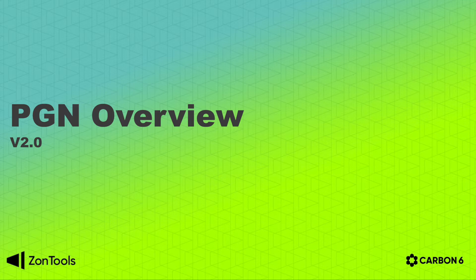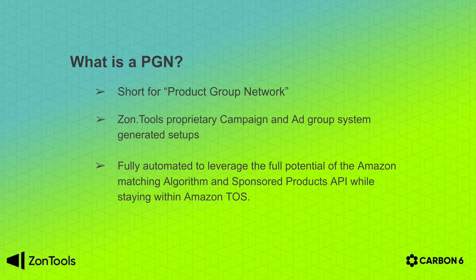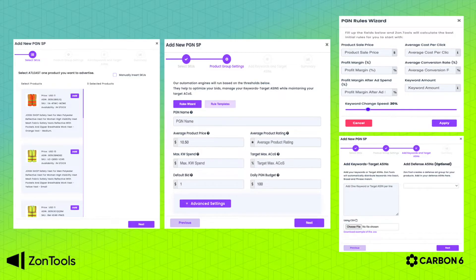Our PGN is a great improvement from what we had before. A PGN is a product group network and are proprietary to ZonTools — proprietary campaign and ad group setups that our system generates. It fully automates for you in order to leverage the full potential of the Amazon matching algorithm and sponsored product API while staying within Amazon TOS. You can easily create a PGN with a few clicks and a few pieces of information will be asked from you.